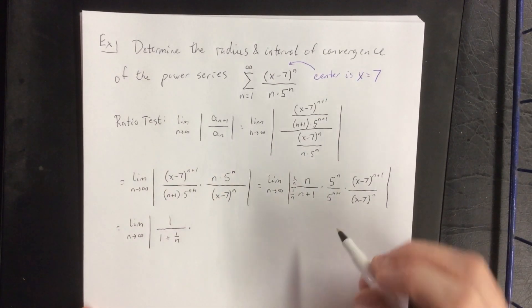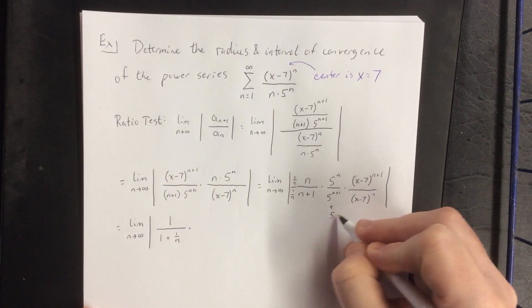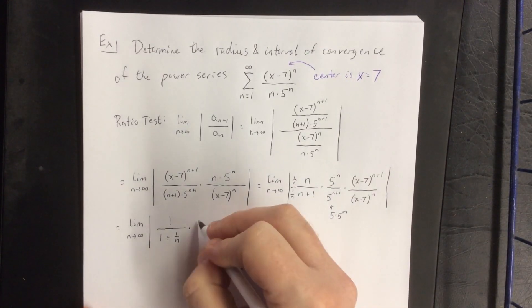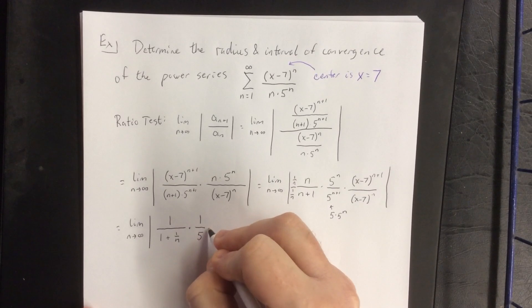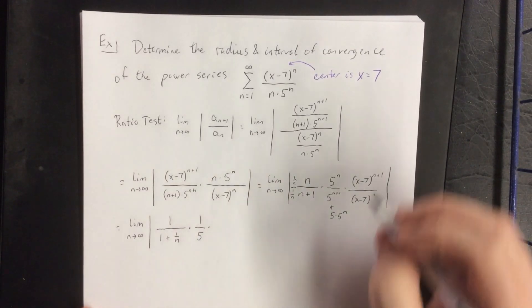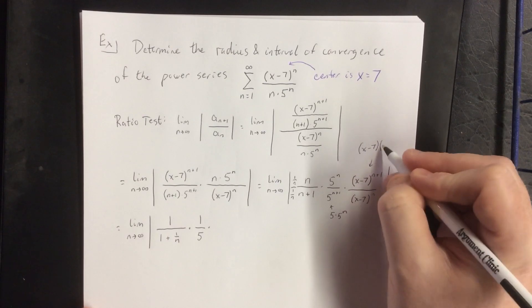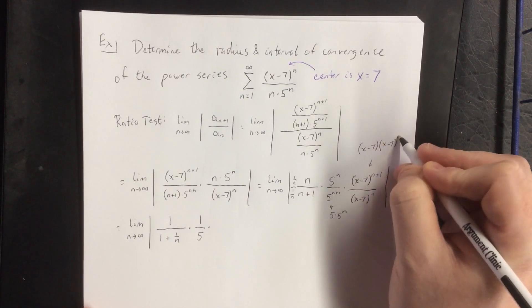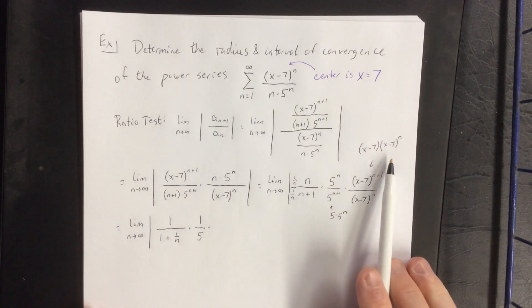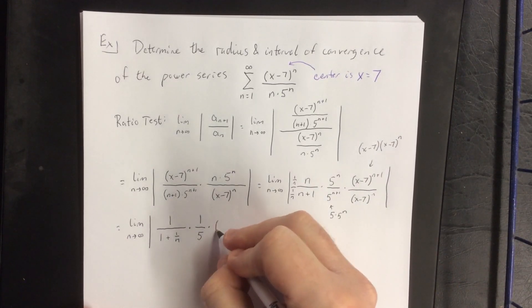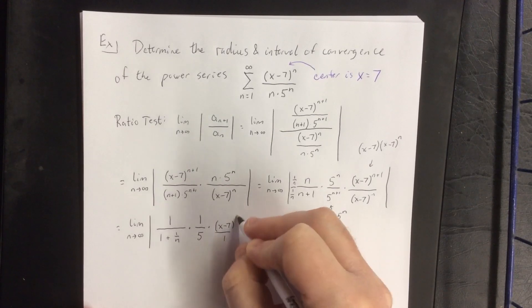5 to the n over 5 to the n plus 1, we can express 5 to the n plus 1 as 5 times 5 to the n and cancel 5 to the n with 5 to the n, leaving us with 1 fifth. Performing the same algebraic manipulation on the n plus 1 power of x minus 7, we can call that x minus 7 times x minus 7 to the nth power to cancel out the nth powers, leaving us with x minus 7 over 1.